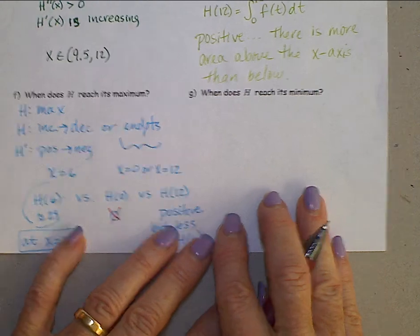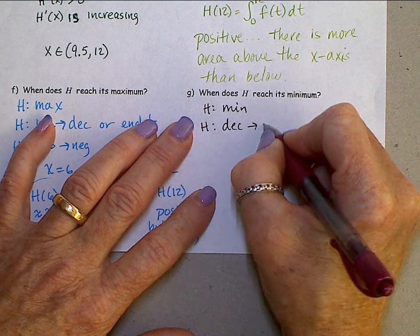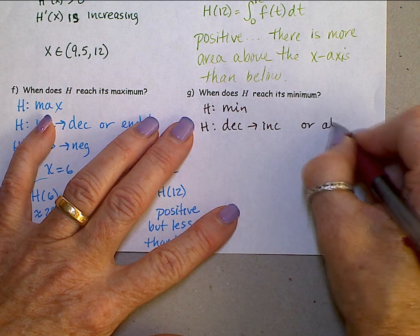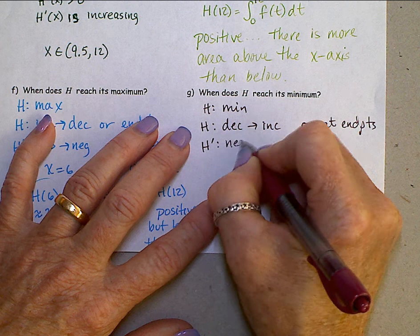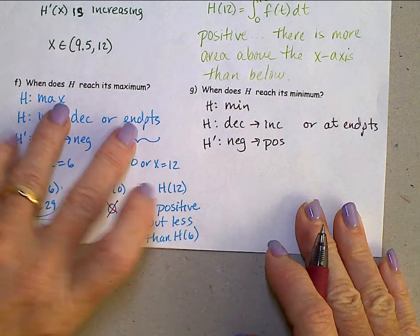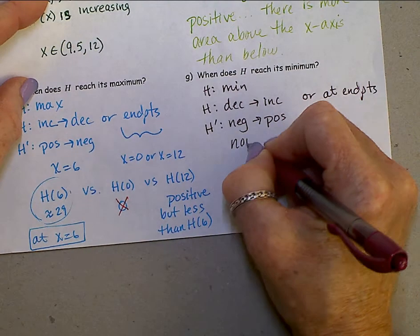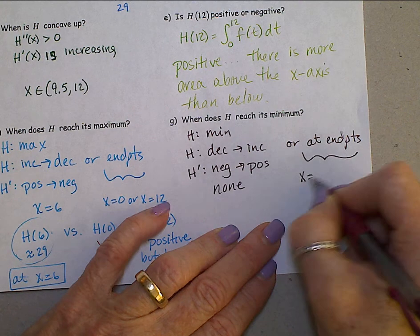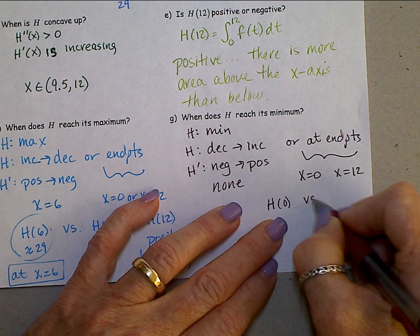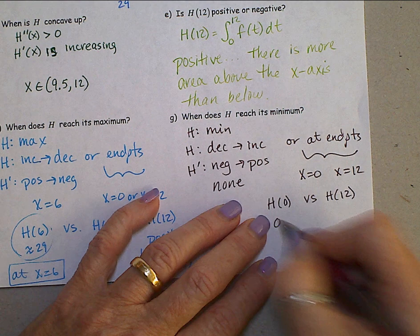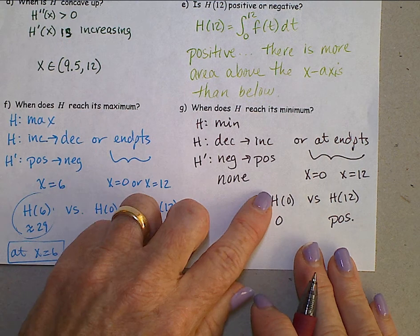When does h reach its minimum? For h to have a minimum, that means that h has to change from decreasing to increasing or at the end points, which means h prime has to change from negative to positive. And looking back at our graph, h prime changing from a negative value to a positive value does not happen. End points then, x equals 0, x equals 12. So we will have to compare h of 0 versus h of 12. h of 0 is 0, h of 12 is a positive number. The minimum value occurs at x equals 0.